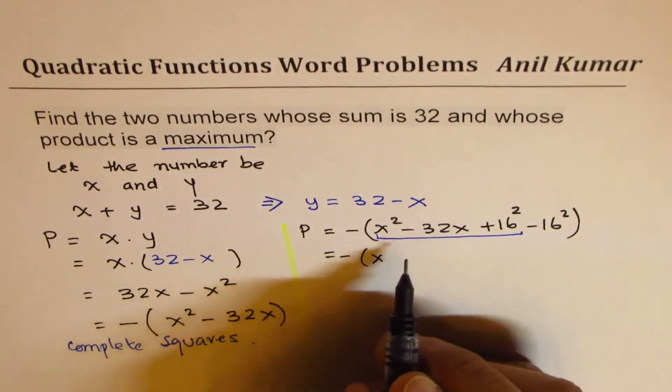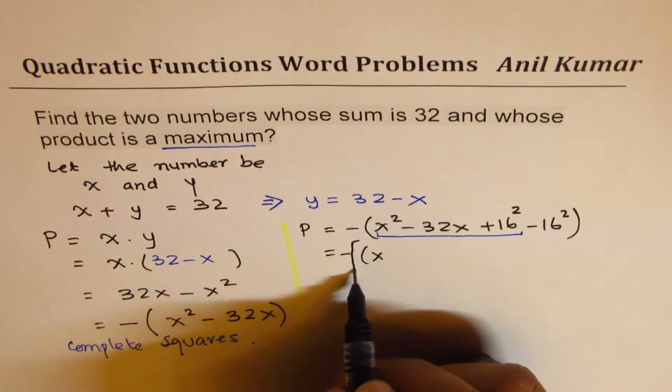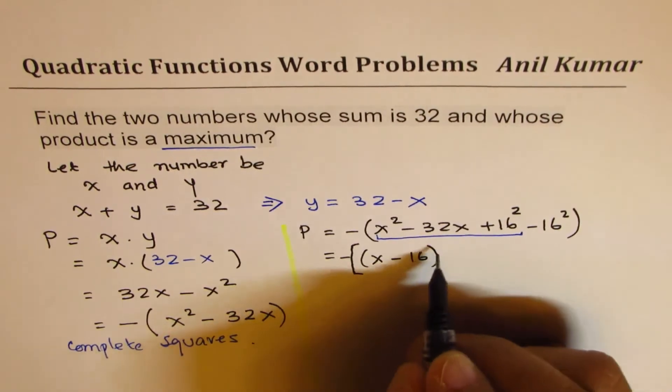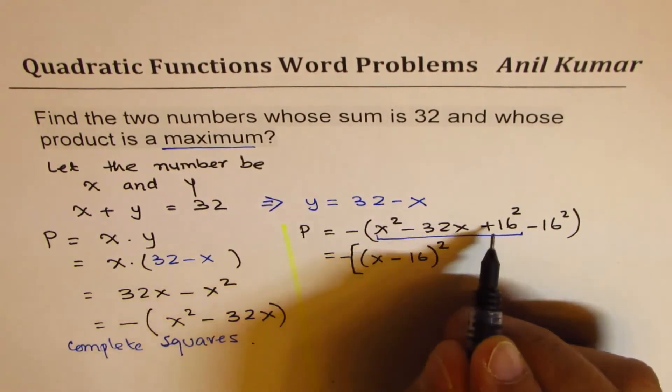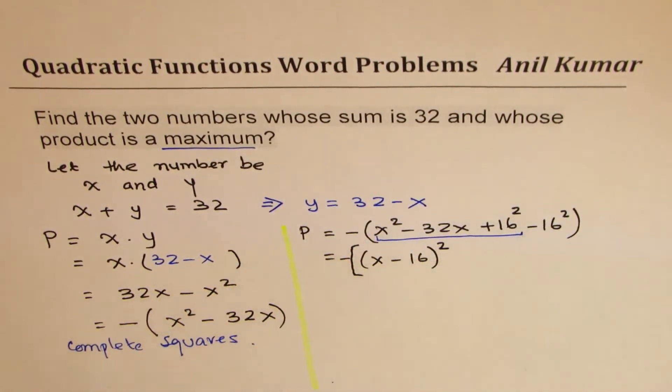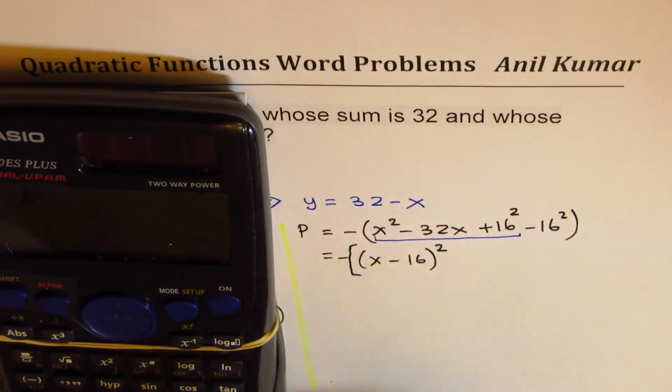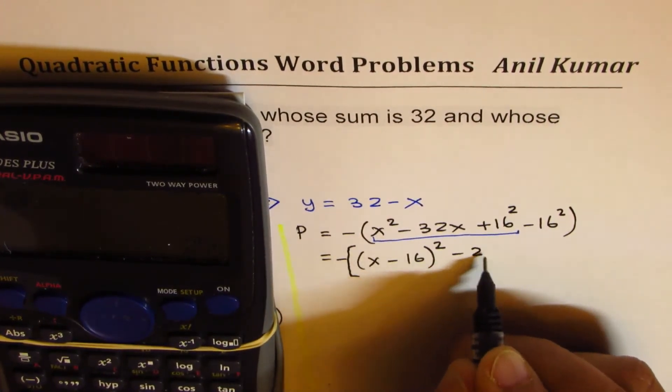So we have x, let me put a square bracket also, x minus 16 whole square. So that takes care of the three terms, and then we have minus 16 square. So let's write down, 16 square is how much? 256 with a negative sign.